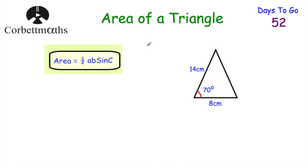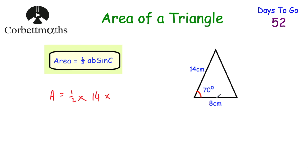Today we're looking at finding the area of a triangle using the formula half AB sine C. So if we've got a triangle where we know the lengths of two sides and the angle enclosed between them — here we've got 14 centimetres and 8 centimetres, and the angle of 70 degrees between them — we can use the formula half AB sine C. So the area equals a half, multiplied by A (which is 14), multiplied by B (which is 8), multiplied by the sine of the angle in between them, so the sine of 70.